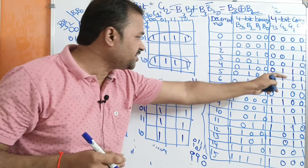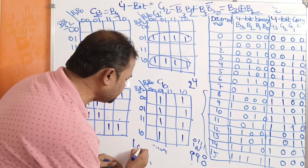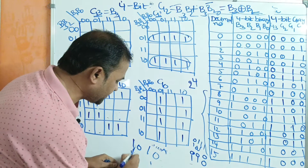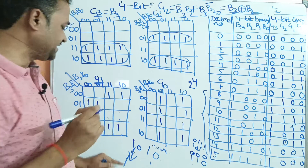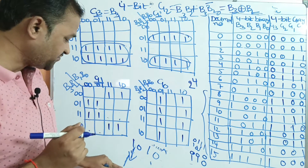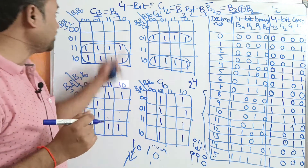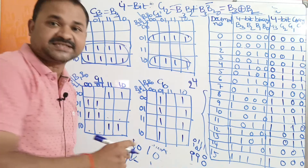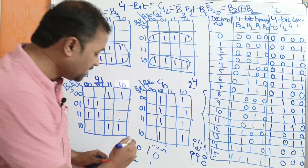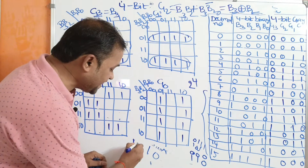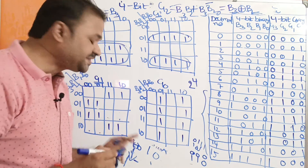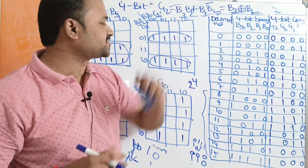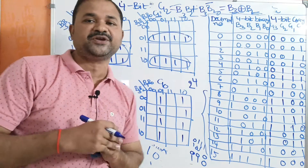So if we observe any number, say 1010: we keep the first bit as it is, so G3 equals B3. The second gray code bit is obtained by performing XOR on B3 and B2, which matches our derived formula G2 equals B3 XOR B2.